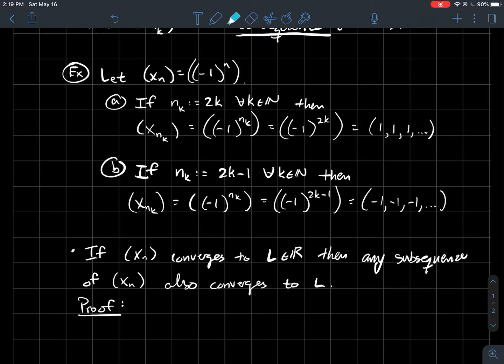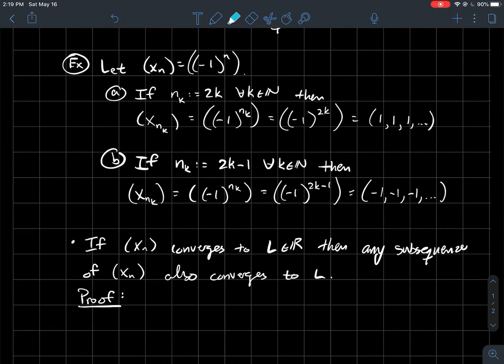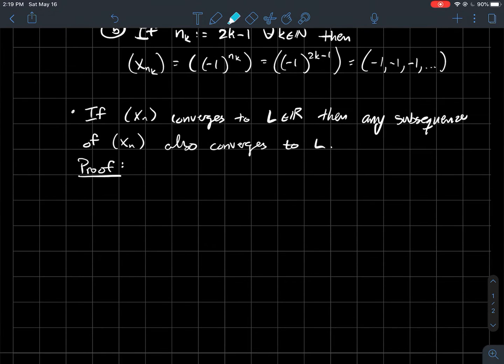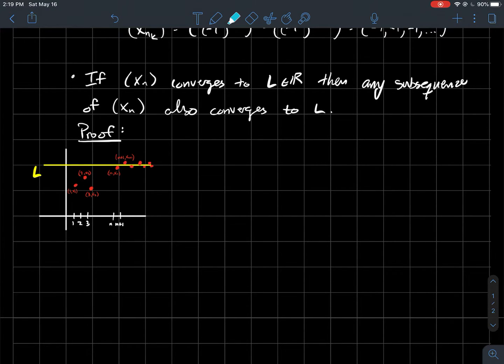So one result is if xn converges, so if the whole sequence converges to L, and L's a real number, well then any subsequence of xn also has to converge to L. And I'll try to draw you a picture, I think, first of why that should be believable.